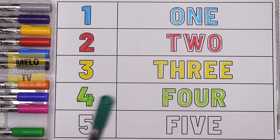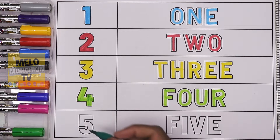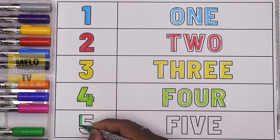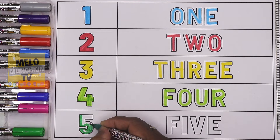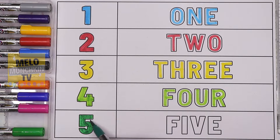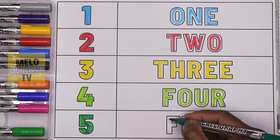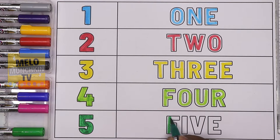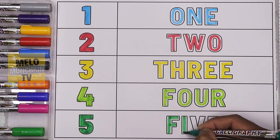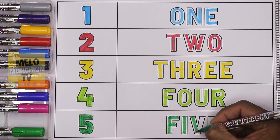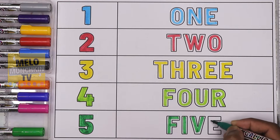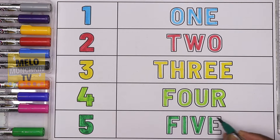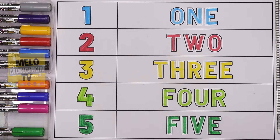Next, I'll take dark green color to write number five. This is number five. The spelling is F-I-V-E. Five.